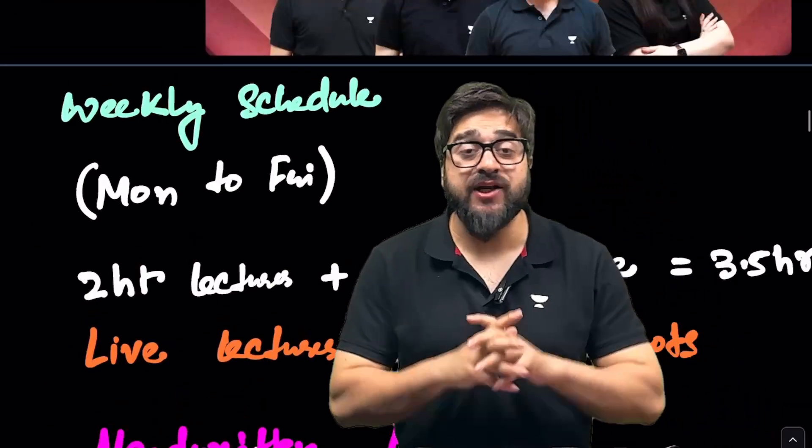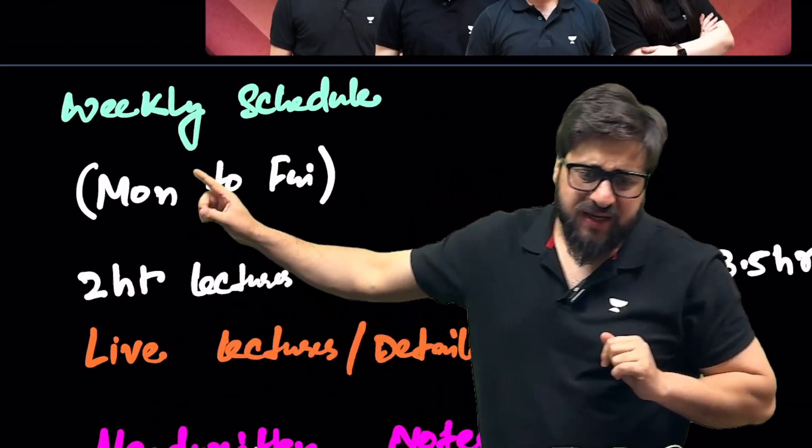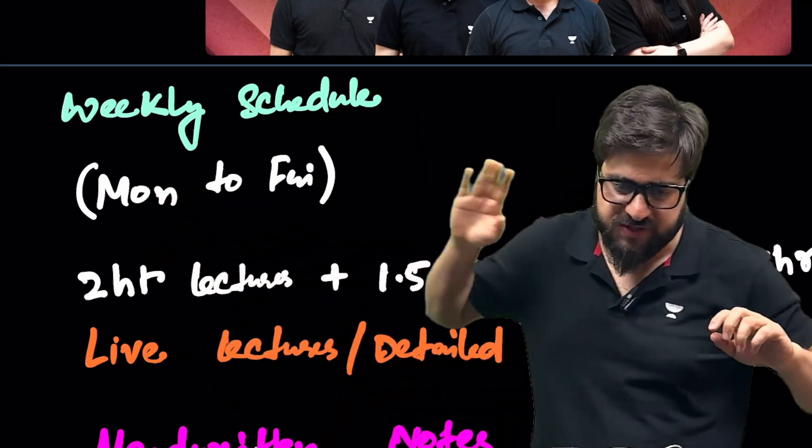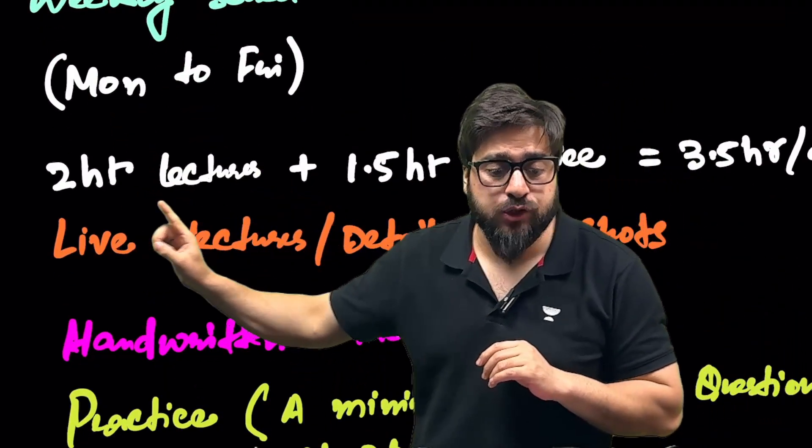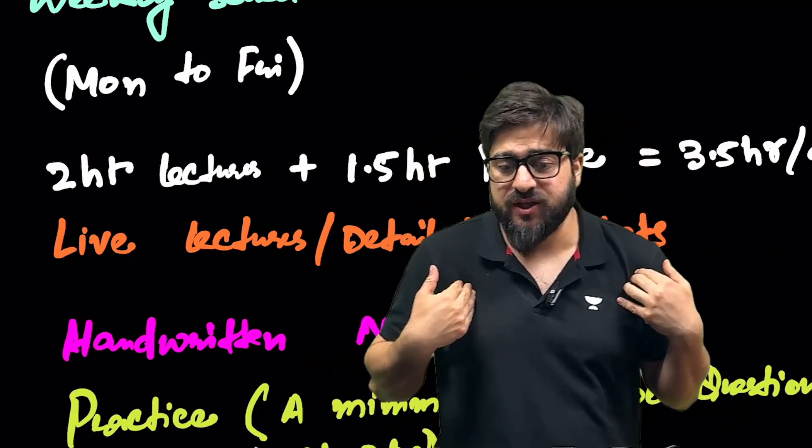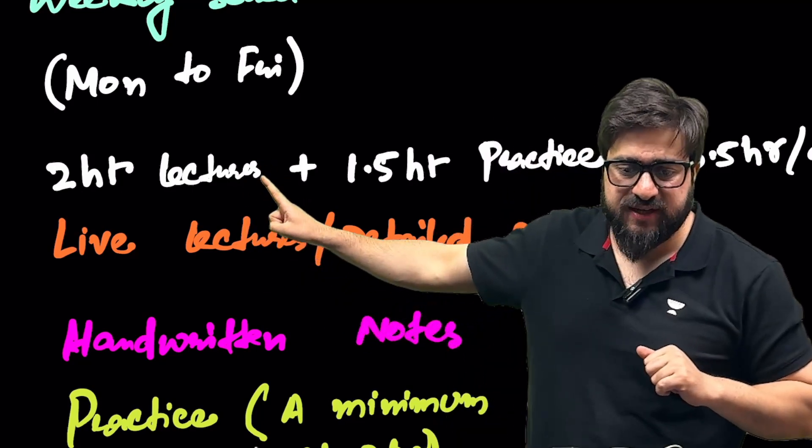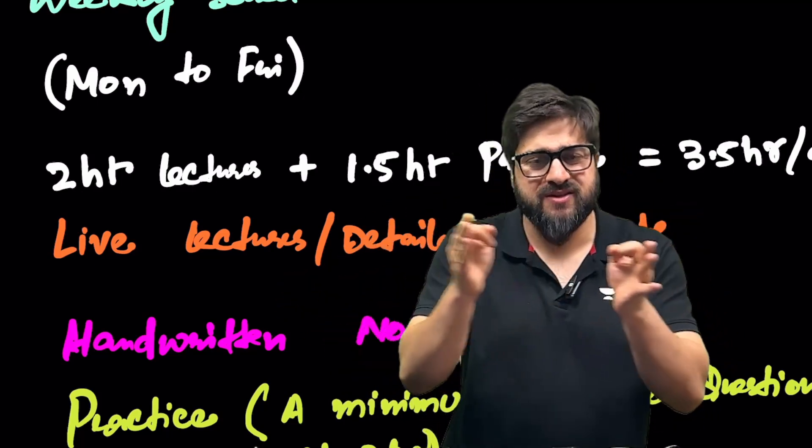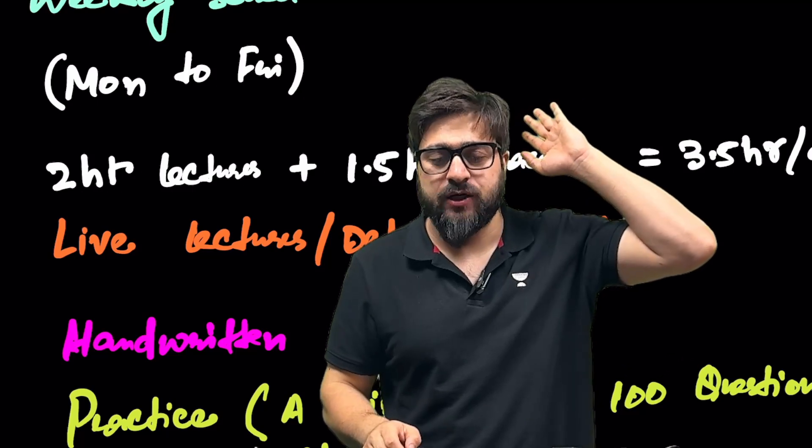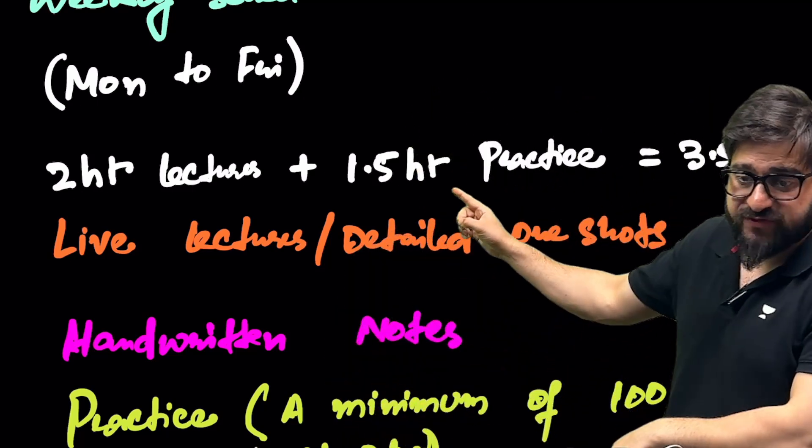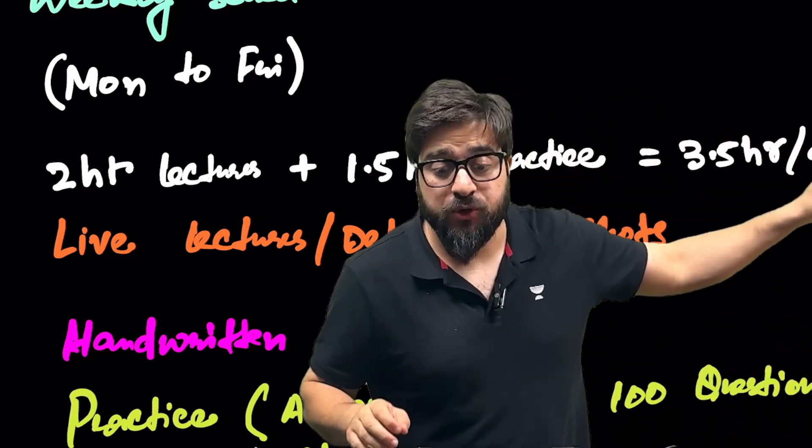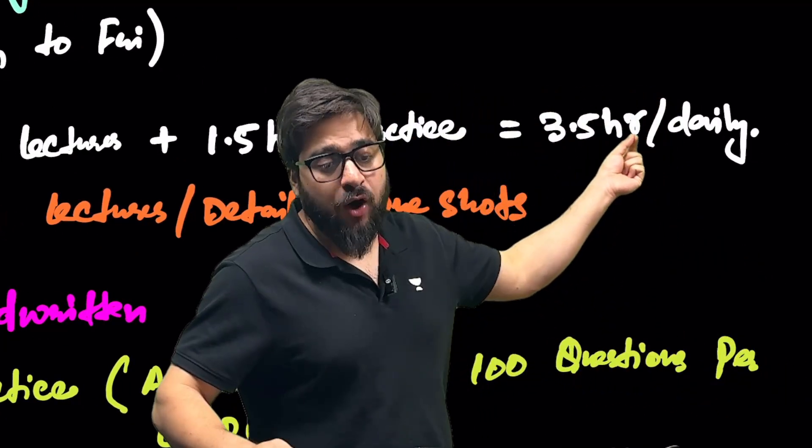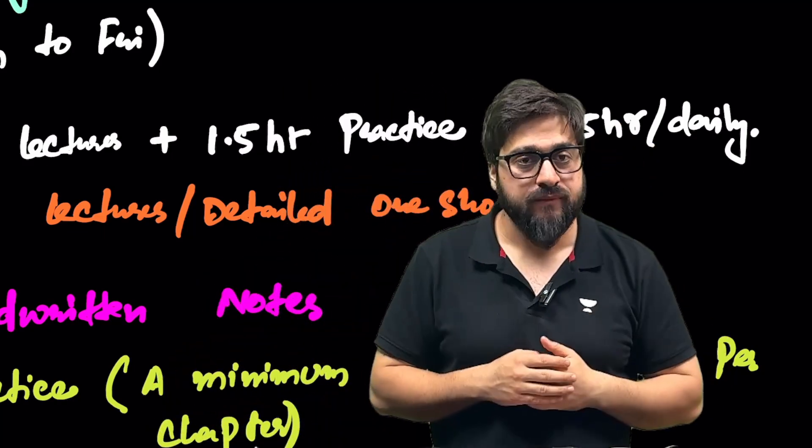When it comes to the weekly schedule, in order to score 180 out of 180, how you are supposed to do that? Let's suppose from Monday to Friday, you will have to study this particular subject, that is physics. So we say first you will have to go with the two hours of the lectures in the batch. Like I'll be teaching the physics in your Phoenix 3.0 batch. I'll be taking every single day, I'll be taking the two hour lecture. You will have to attend that lecture. Then afterwards, you will have to do 1.5 hours of the practice from your end. This is how much time daily, that is 3.5 hours daily.